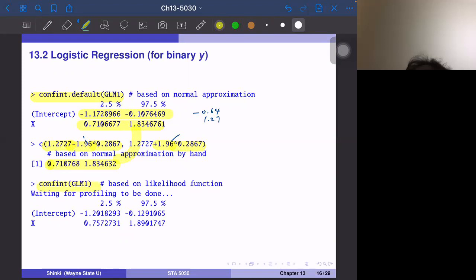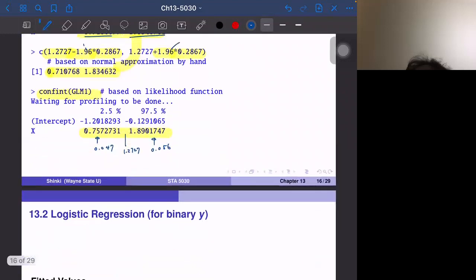Based on likelihood function, the confidence interval is given here. It's not symmetric around the center. This value is 0.047 larger and this is maybe 0.056 larger. If we compare with these numbers, both are larger but for different amounts. It's not symmetric around the center of 1.2727. This is more accurate confidence interval, not based on normal approximation.